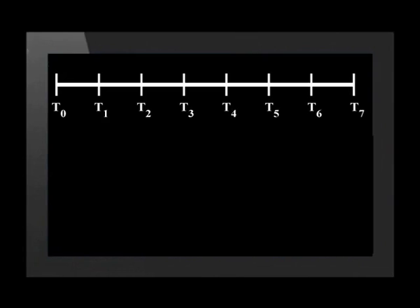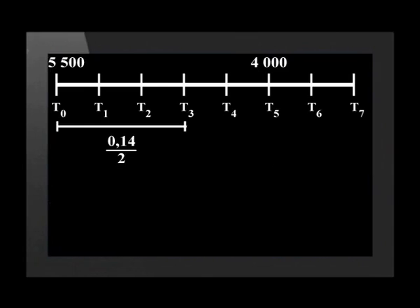T0 represents year 0. The timeline goes all the way to T7, showing all seven years of the investment. The 5,500 rand is invested at the beginning of the first year, so we place it above T0. After five years, at T5 on the timeline, another 4,000 rand is invested. We put the interest rates below the timeline. For the first three years, the interest rate is 14% compounded semi-annually, so we draw a line from T0 to T3 and write 0.14 divided by 2. The interest rate then changed to 12% per annum compounded monthly — we draw a line from T3 to T7 and write 0.12 divided by 12.